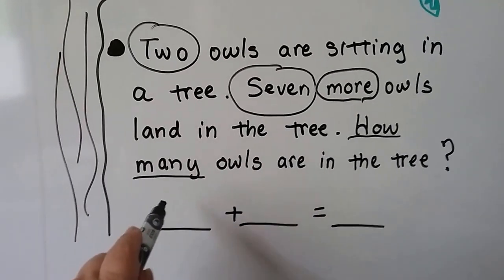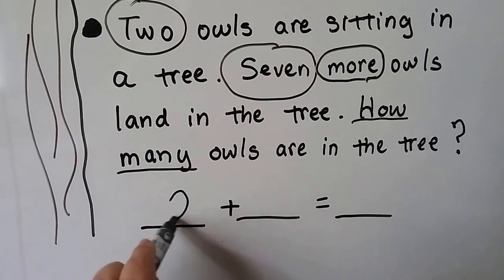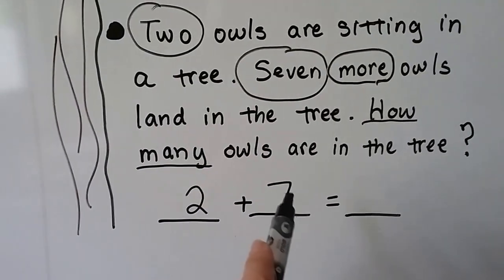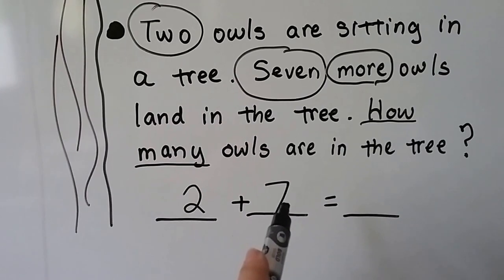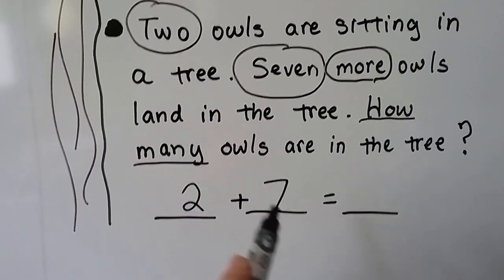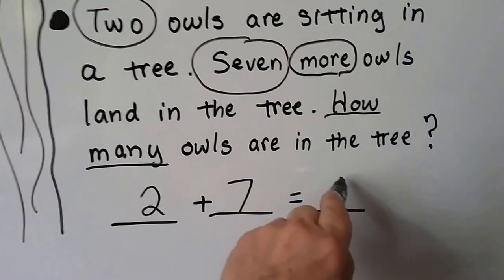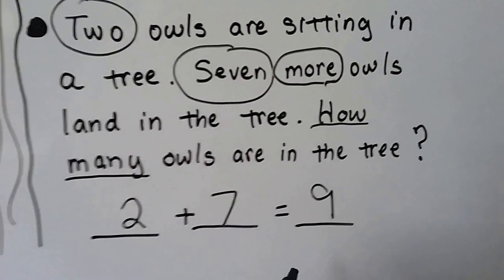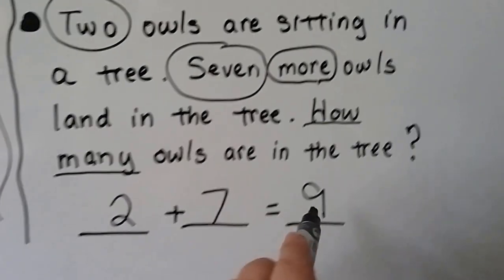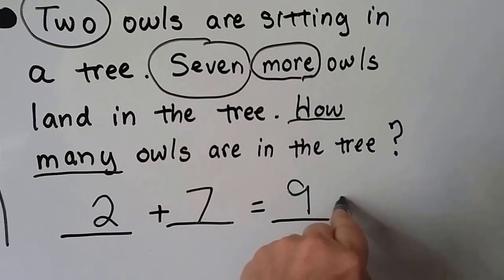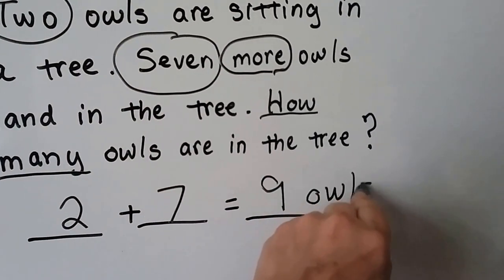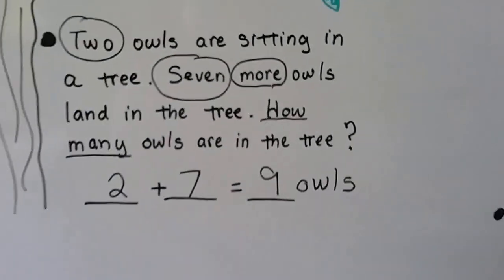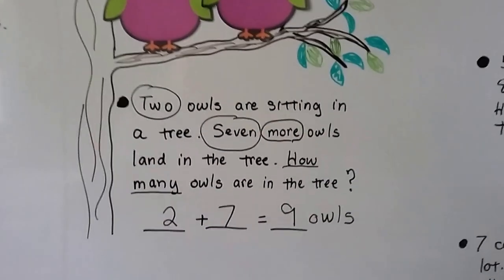We write our equation: two plus seven. We start with the seven and count on — seven, eight, nine. Then we label it: nine owls. Two plus seven equals nine.